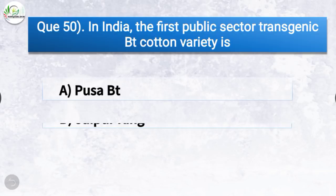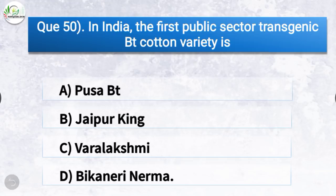Question number 50: In India, the first public sector transgenic BT cotton variety is? The correct answer is option D, Bikaneri Narma. In India, the first public sector transgenic BT cotton variety is Bikaneri Narma.